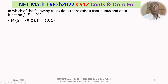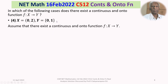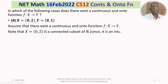Let's move on to option 4. X is equal to the open interval (0,2) and Y is equal to the doubleton set {0,1}. We will show that there does not exist a continuous and onto function f from X to Y. So assume the contrary — assume that there exists a continuous and onto function f from X to Y.